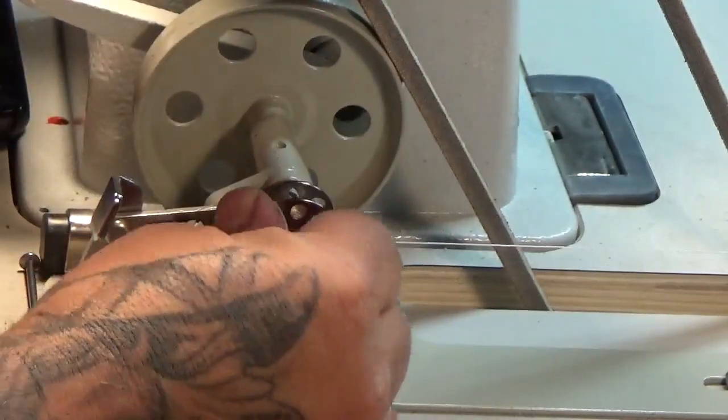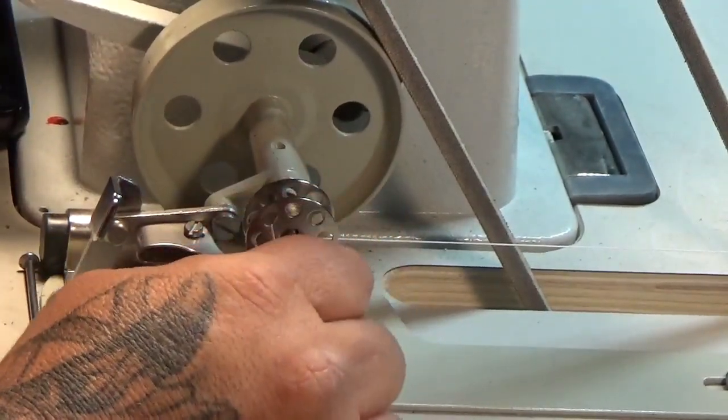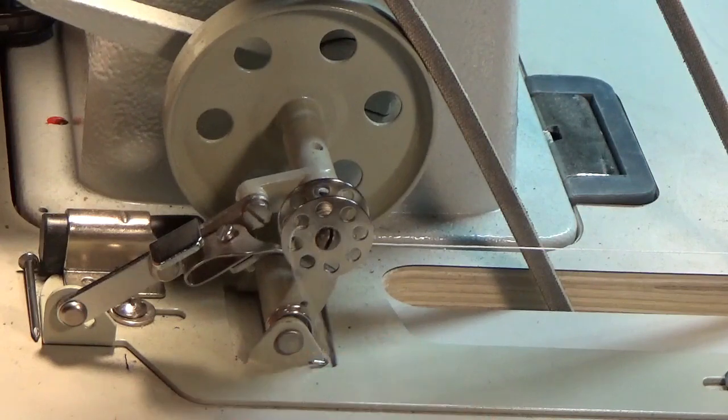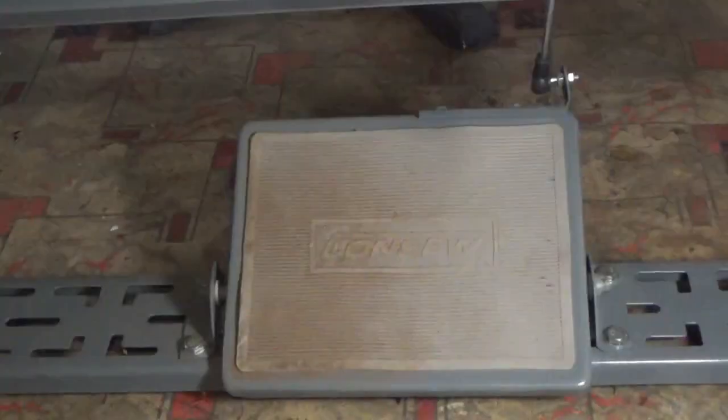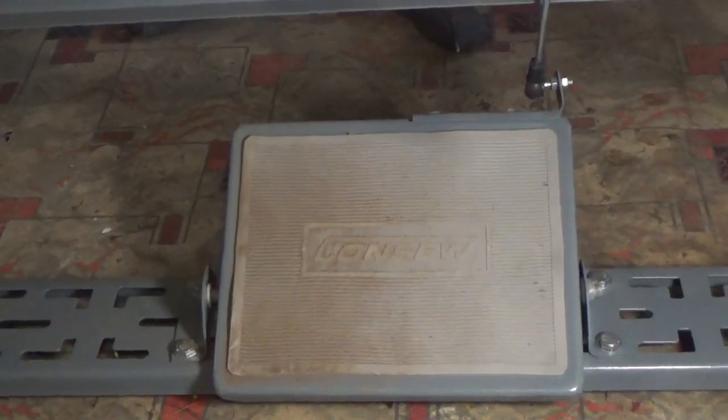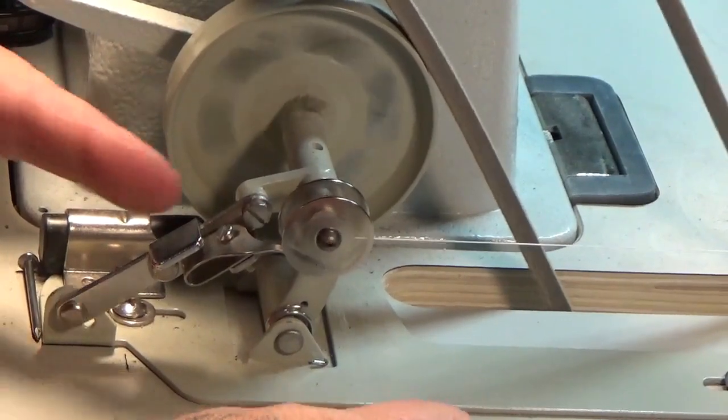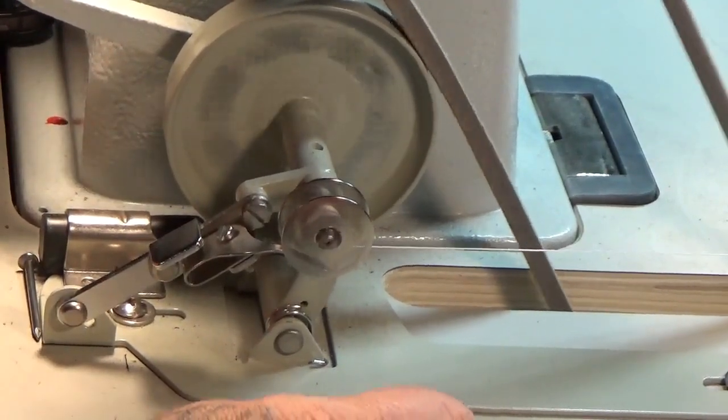I slide it on here. After that, you grab the end of the thread. With the foot pedal, when you start winding your bobbin, you push down and it'll wind as slow or as fast as you want to go.